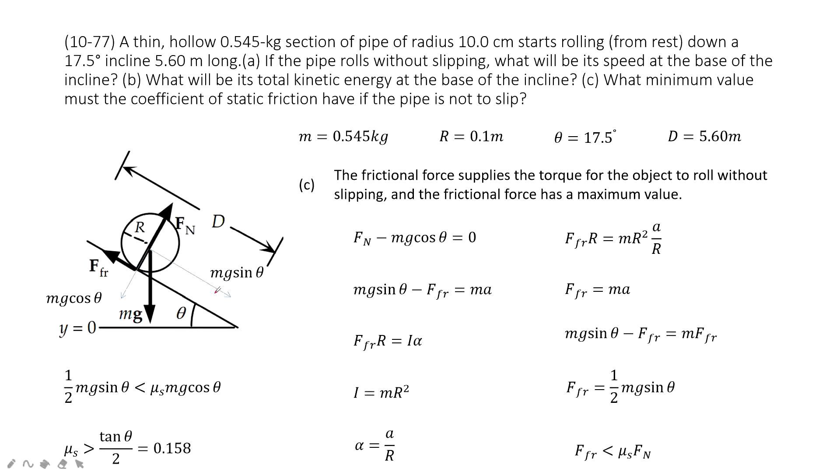Then we consider Newton's second law. First, in this vertical direction, we have F_N minus mg cosine theta equal to zero, because acceleration is zero. And then in this x component, we have mg sine theta minus the friction equal to ma, right? And also this object does rotational motion. So we have the torque, the net torque, the net torque comes from the friction, equal to I times alpha, angular acceleration.